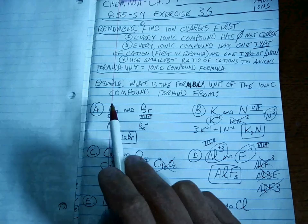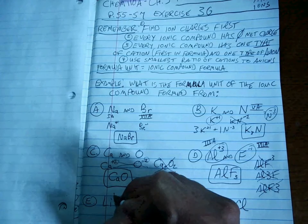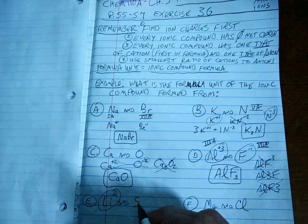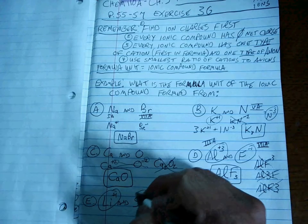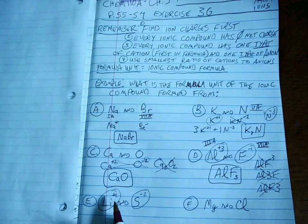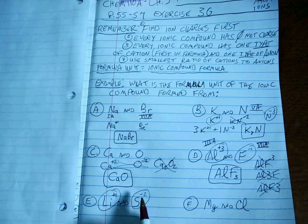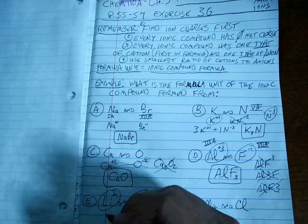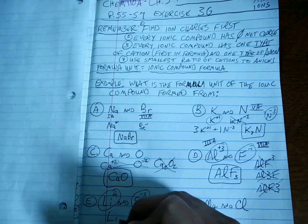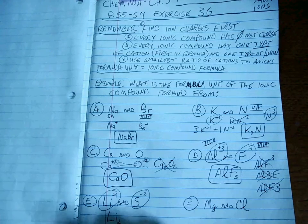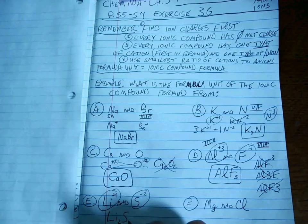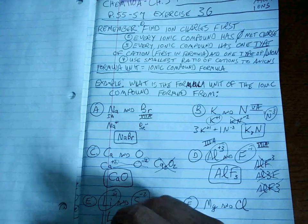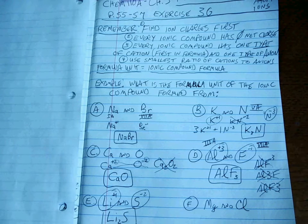Two more to go real quick. Lithium is in the same group as sodium and potassium, so it likes to make a plus 1 charge. Sulfur's in the same group as oxygen, so it likes to make a minus 2. Don't we need two of the plus 1s to even out the 1 of the minus 2? Sure. So how do we write that formula? Lithium 2 says two lithiums. Sulfur 1 means one sulfur. So there's two lithium ions for every one sulfur anion in this ionic compound.